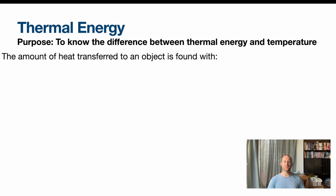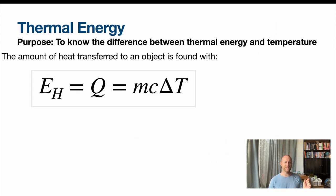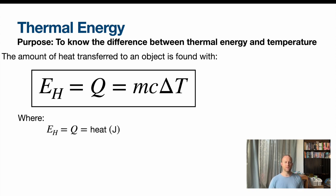So the amount of heat transferred into an object is found with this equation, EH or Q. It's written as both. Don't ask me why. I don't know why heat is Q, but you'll see it written as Q. This is equal to MC delta T. Again, delta being change in. So EH or Q, that's your heat. It's measured in joules. M is mass.